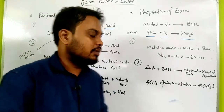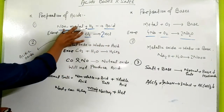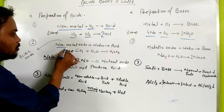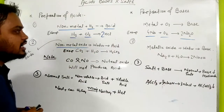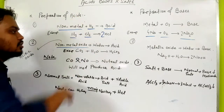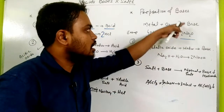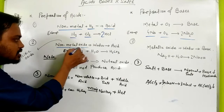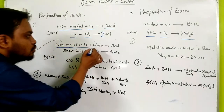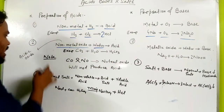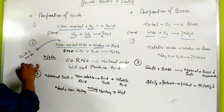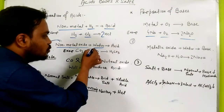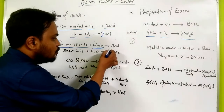Now let's move to the second point. The non-metal that we discussed now becomes non-metal oxide. Non-metal oxide is acidic in nature, and metal oxide is basic in nature. So when non-metal oxide — which is acidic in nature — reacts with water, it forms acid.